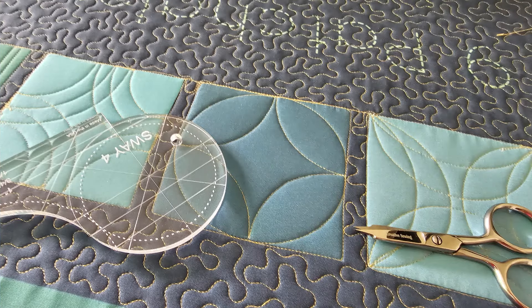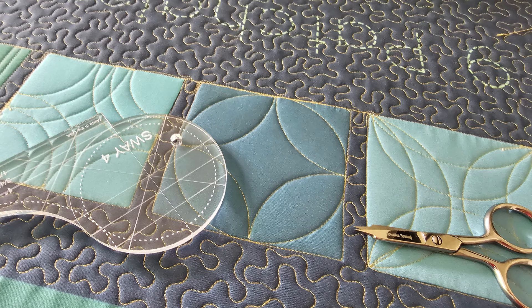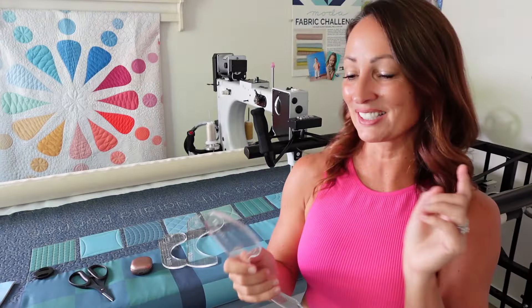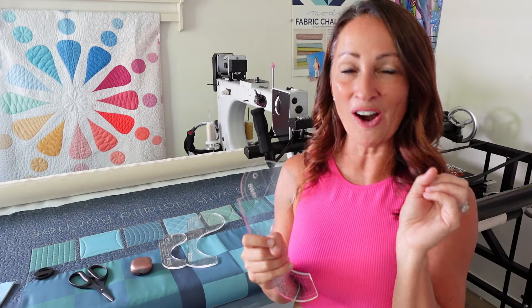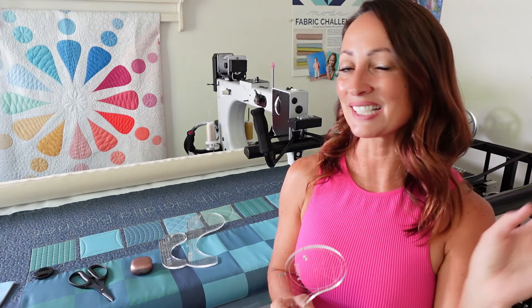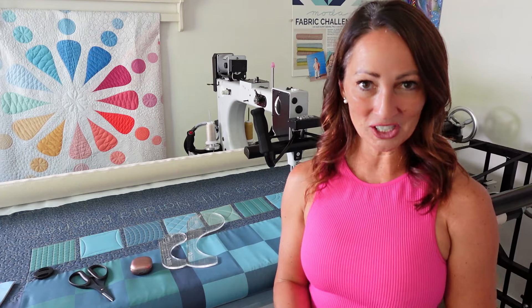I'm going to quilt this whole design with no marking. Machine quilting rulers are awesome because you can just jump right into a quilt and start quilting without having to do any markings. I'm going to show you exactly how we do that.